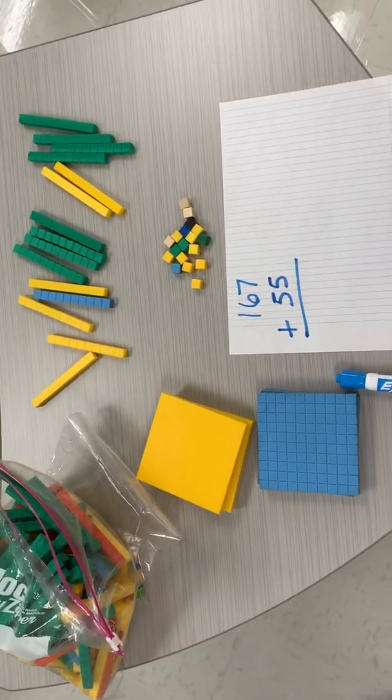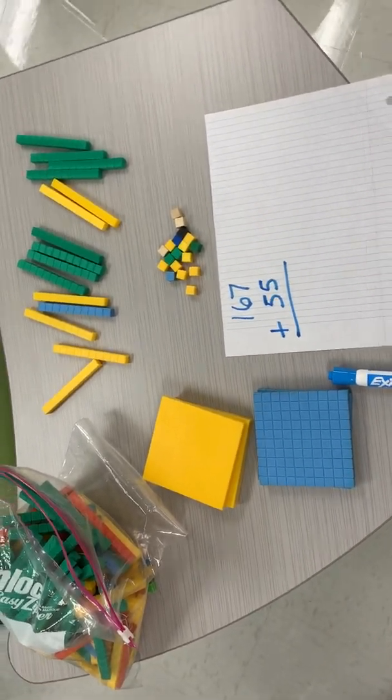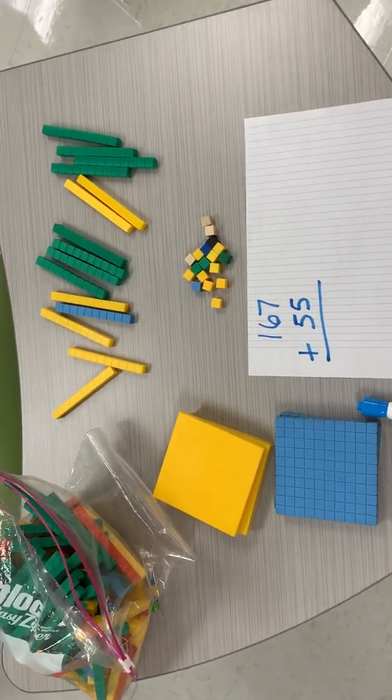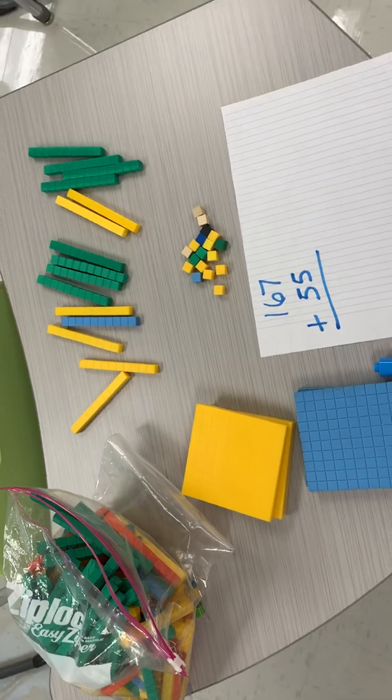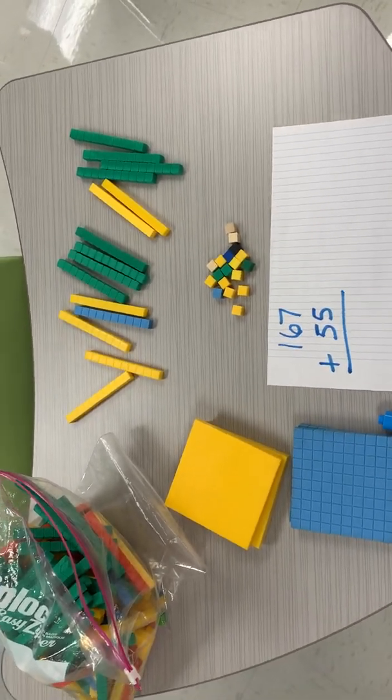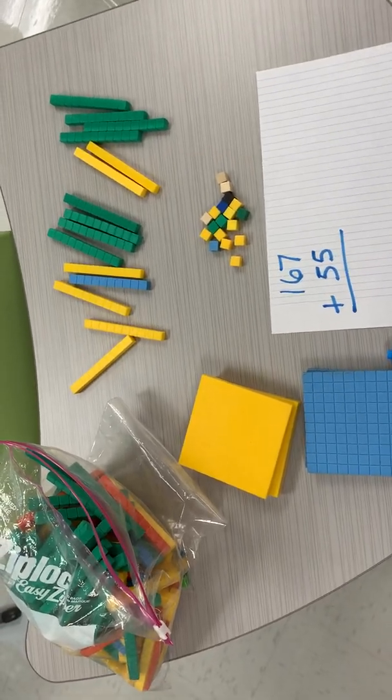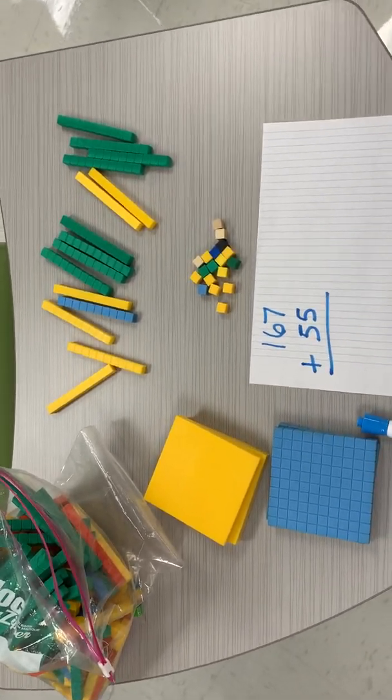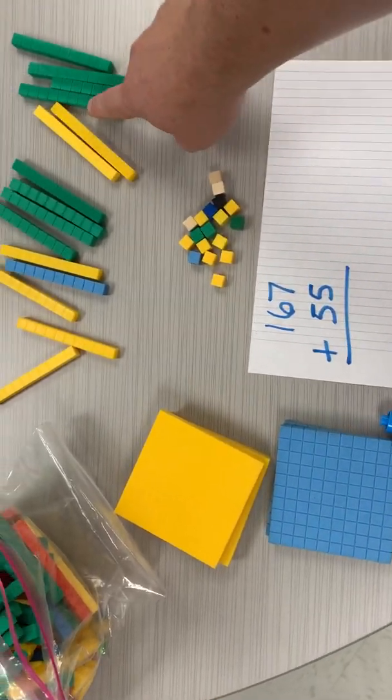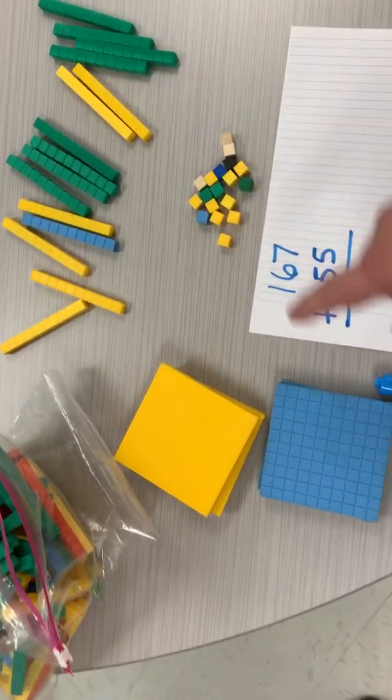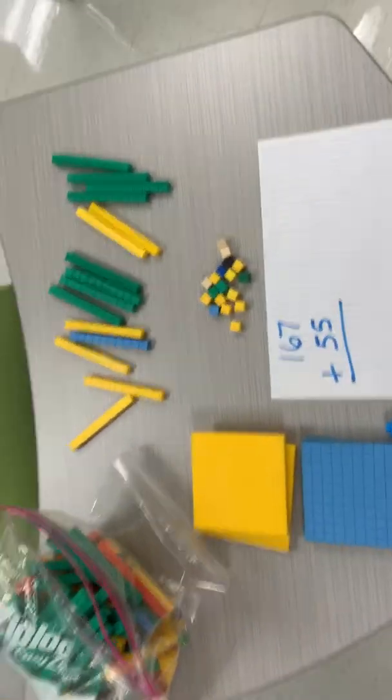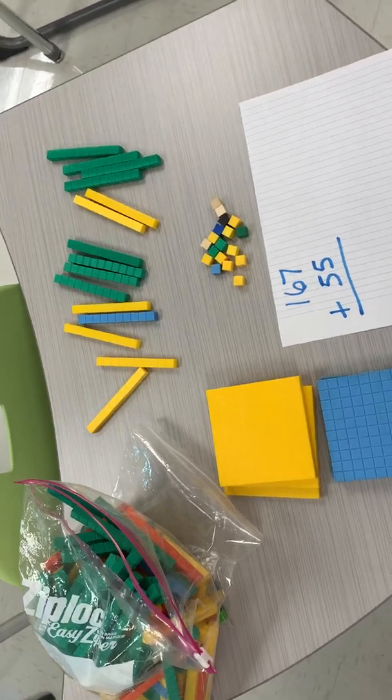All right, and this is what place value looks like if you're using the manipulatives. I know some of you will have these at home and some of you probably don't, but you can use other things for them. You can use coins, for example. You could use pennies for the ones, you could use dimes for the tens, and dollars for the hundreds. So if you wanted to use coins, you could use coins.